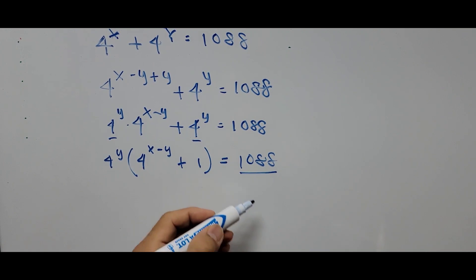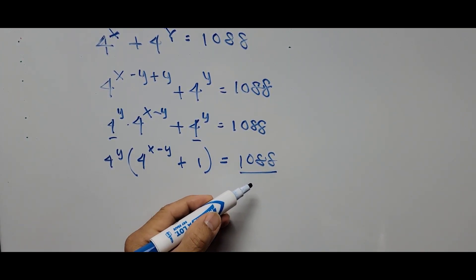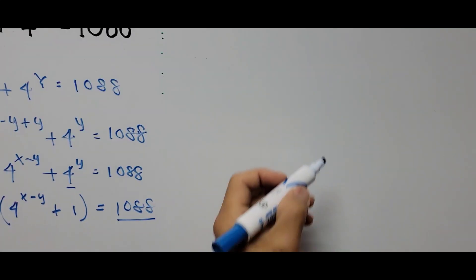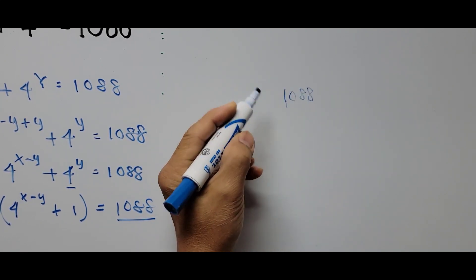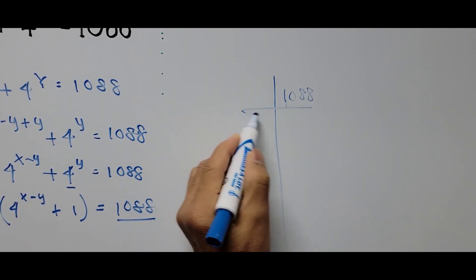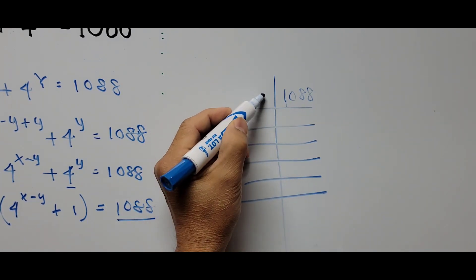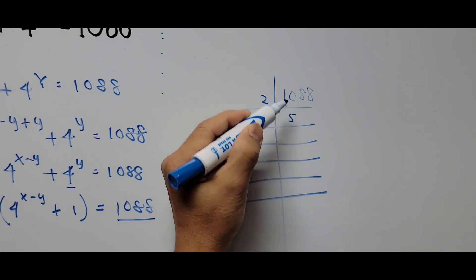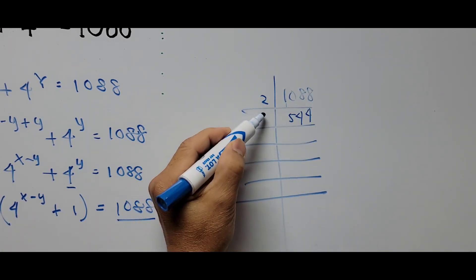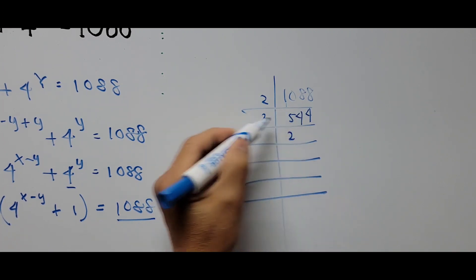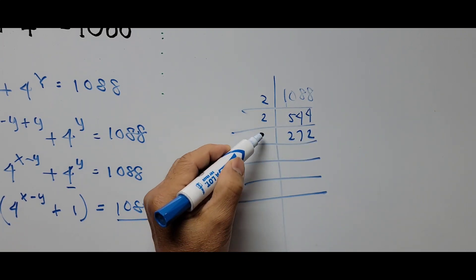Now we focus on the right side of the equation — the constant 1088. We need to find the factors of 1088, so we start dividing by 2. A little factor tree: 1088 divided by 2 is 544, and continuing — 8 divided by 2 is 4, and 4 divided by 2 is 2.